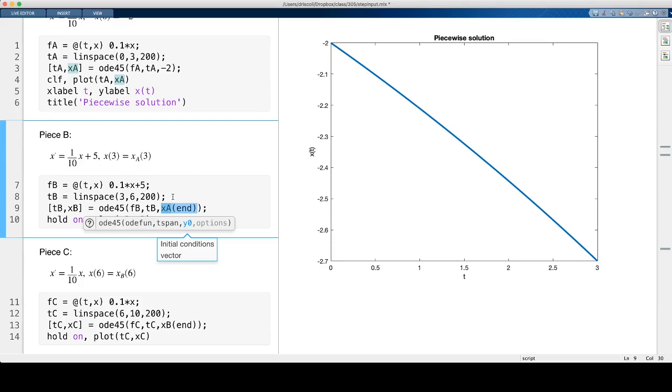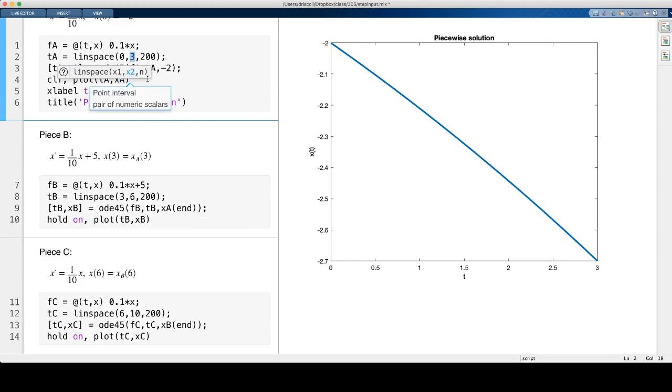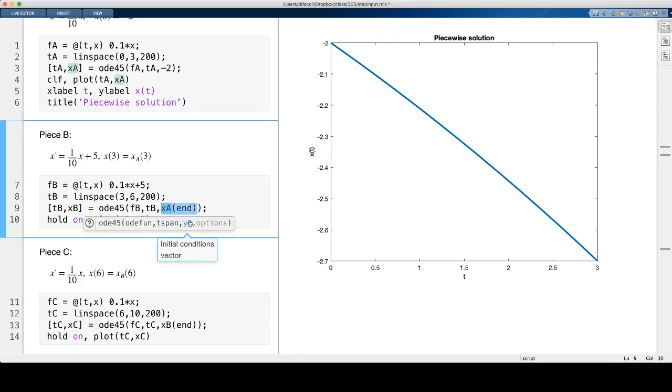Instead, what I want is the value of the solution that corresponds to t equals 3, which is at the very end of the vector, right? That was the very last thing we asked for in the first part. So here is the syntax for getting the last element of that solution vector from the previous segment.